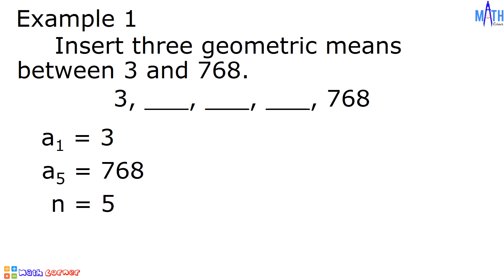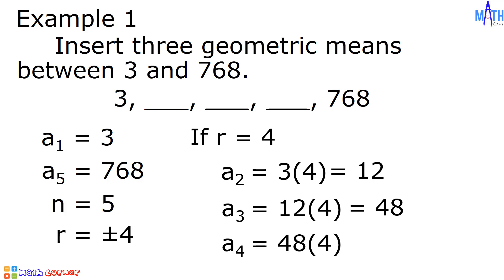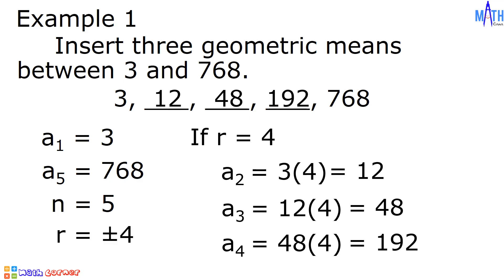We have two geometric sequences since we have two values of r. If r is equal to 4: a sub 2 is equal to 3 times 4, where 3 is the first term and 4 is the common ratio, so 3 times 4 is equal to 12. a sub 3 is equal to 12 times 4, which is 48. a sub 4 is equal to 48 times 4, which is 192. If r is equal to 4, the three geometric means between 3 and 768 are 12, 48, and 192.